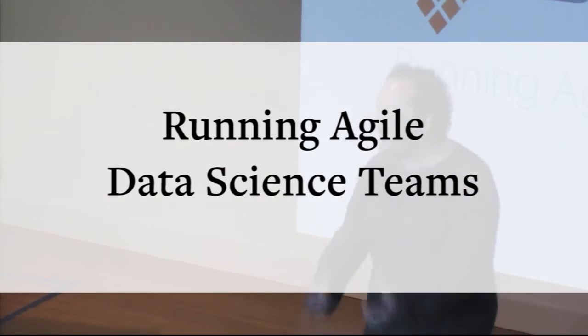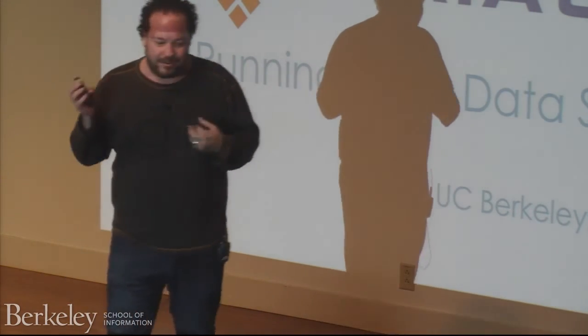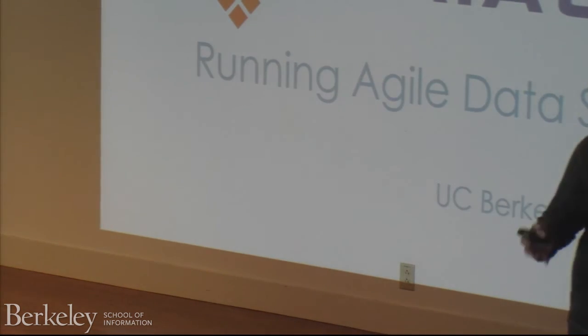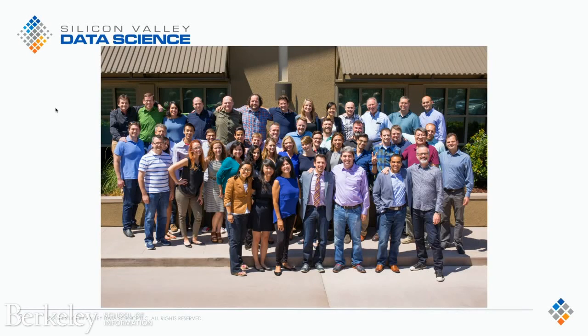We're going to be talking about data science methodology — an awesome subject about an hour after lunch when everything's settling in. Instead of talking about the cool thing I just did with deep learning or random forest, I'm going to talk about how we do things. My perspective comes from working at Silicon Valley Data Science, a consulting company that builds data science things for other companies under contract. If I screw up a data science project, I don't just get fired — I can get sued and risk the livelihood of all these people. So working under contract puts me in a frame of mind where rigor isn't just a nice thing to have — it's a necessity.